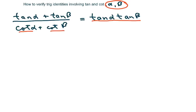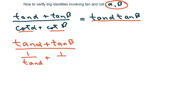So the first thing I'm going to do is just write this with tan as a trig ratio. So this is going to be 1 over tan of alpha plus 1 over tan of beta.